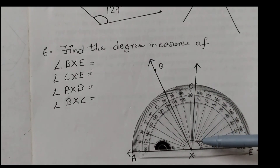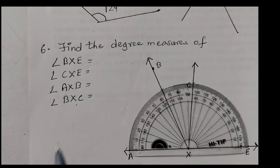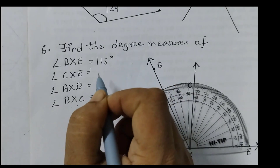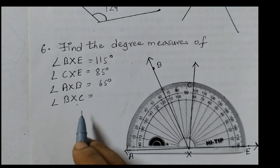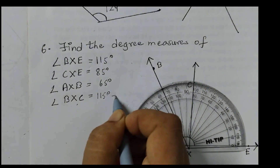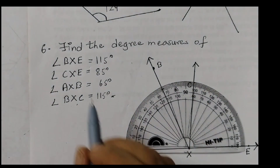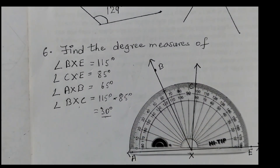For angle BXC, we use subtraction: take angle BXE (115 degrees) minus angle CXE (85 degrees), which gives 30 degrees. So the angles are: angle BXE = 115°, angle CXE = 85°, angle AXB = 65°, and angle BXC = 30°. With this we have found all the degree measures for question six.